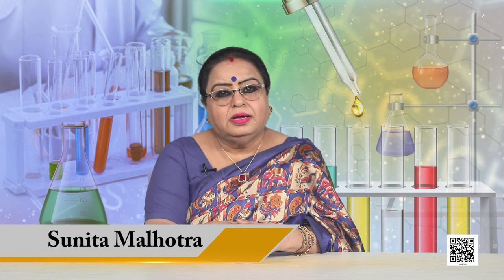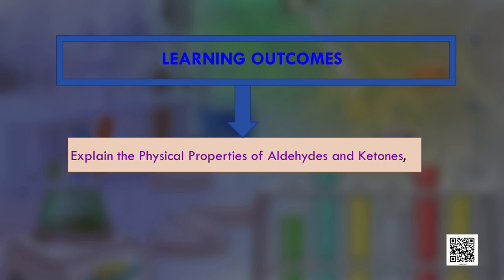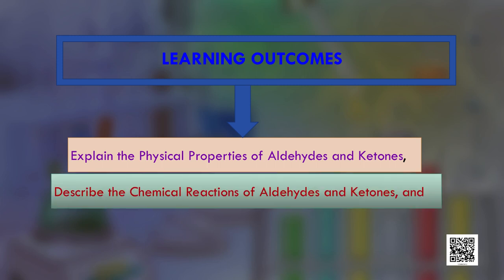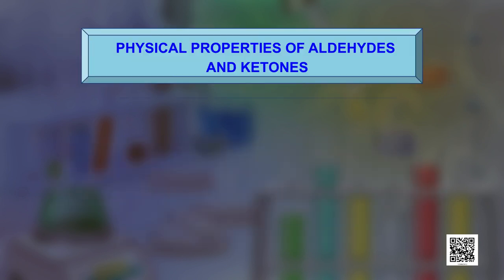Welcome learners to this session on aldehydes and ketones part 2. In aldehydes and ketones part 1, you studied the structure and preparation of aldehydes and ketones. In this session you will learn about the physical properties, chemical reactions, and uses of aldehydes and ketones. The learning outcomes are to explain physical properties, describe chemical reactions, and discuss the uses.